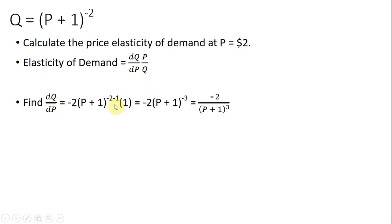So here's the derivative. This minus 2 comes from the exponent that I brought down in front. Then in this exponent, it's going to be minus 2 minus 1. So that's where that minus 1 is coming from right here.